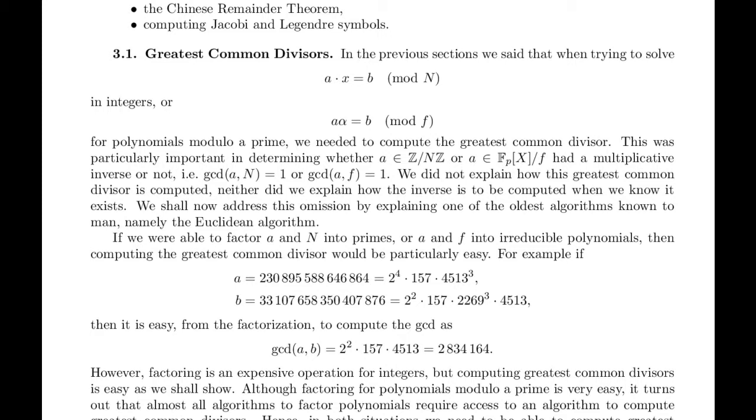I.e. GCD, the greatest common divisor of A and N equals 1. That's in the first one, Z mod N Z. Or GCD of A comma F equals 1. In this case, F sub P of X slash F, right? Where A is an element of that, and A and F has greatest common divisor 1. And here, little a and capital N has greatest common divisor 1.